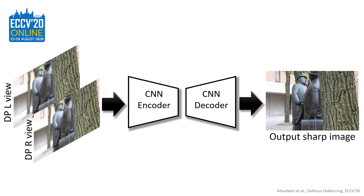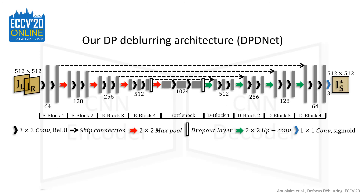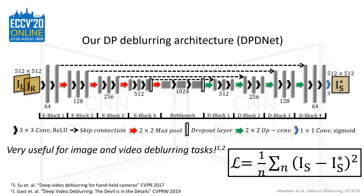As for our deep blurring method, we adapt a CNN encoder-decoder deep model that takes the DP views as input to estimate a sharper image. We adapted an asymmetric encoder-decoder CNN architecture with skipped connections between the corresponding feature maps. Such architectures have been demonstrated to be very useful for image and video deblurring tasks. Our DP-DNet utilizes the DP images IL and IR for predicting the sharp image IS*. We train our model using MSE loss between the output and the ground truth. More details about the training procedure and data preprocessing can be found in the main paper.